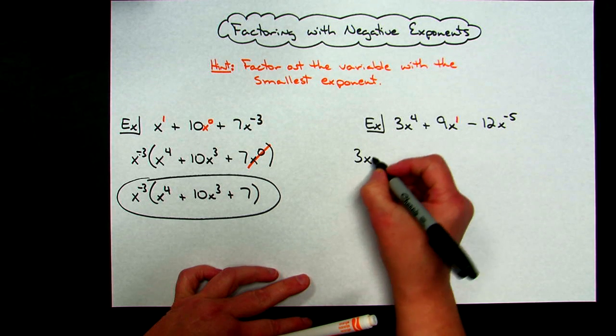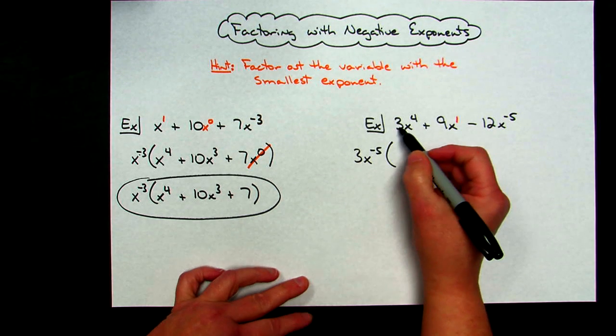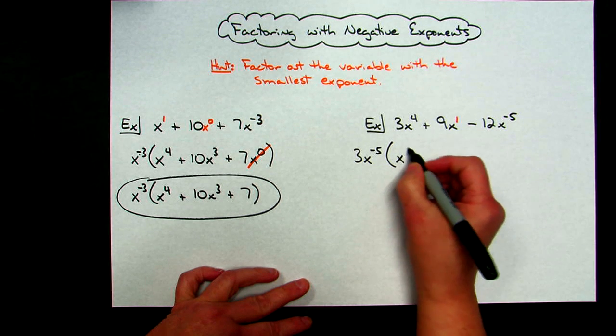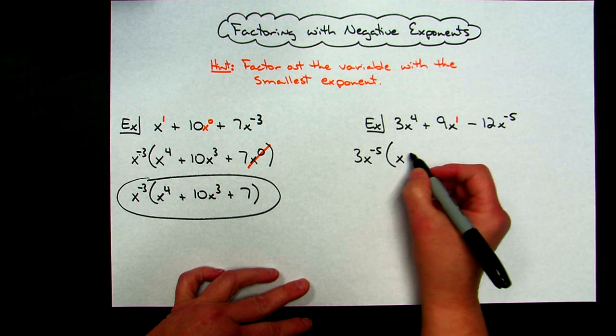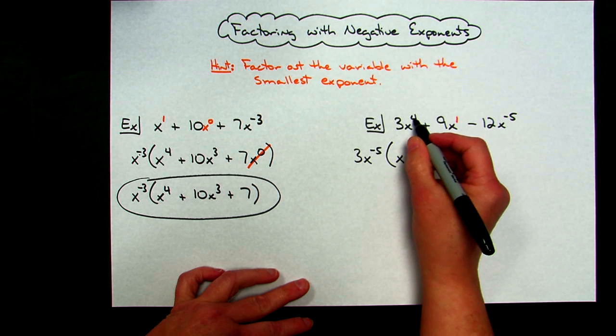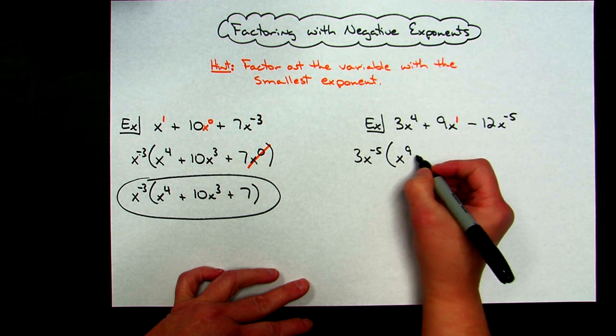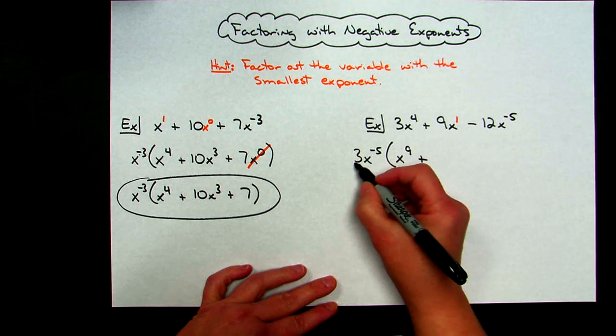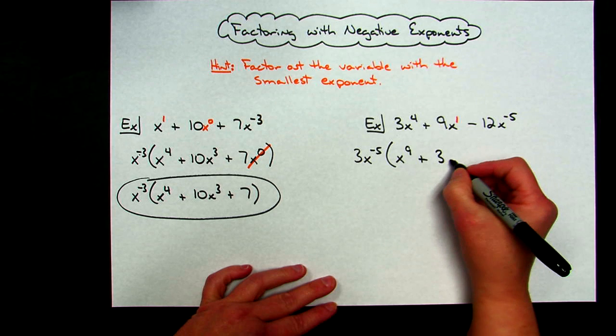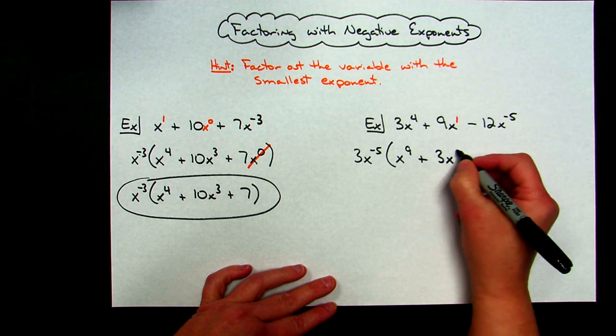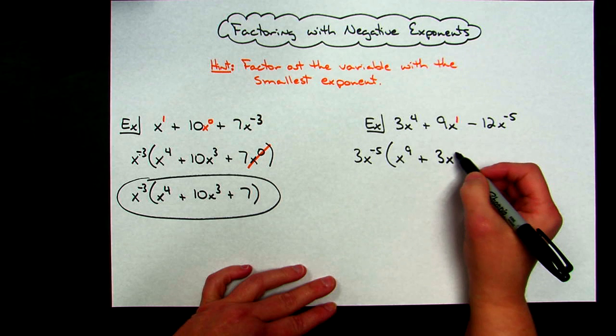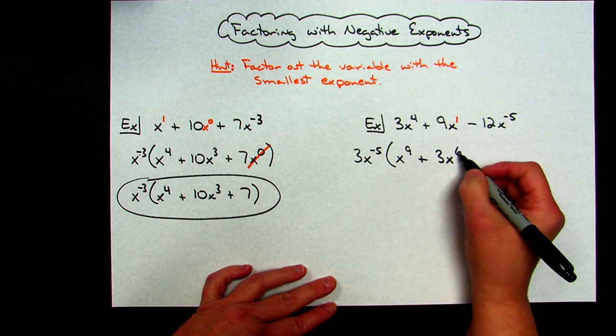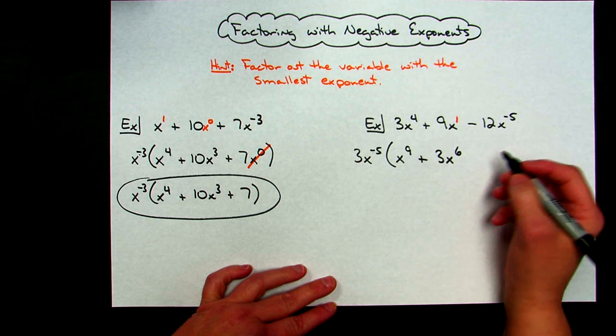So I'm going to factor out 3x^(-5). 3 divided by 3 is going to give me the 1 coefficient. So then I just have to be concerned with what exponent goes right here. -5 plus what number is going to give me 4? Well -5 plus 9 will give you the 4. In this middle term I've got 9, I factored out the 3, that will leave me with a 3. And then I have to figure out what exponent do I need on my x. -5 plus what number will give me 1? If I fill that in with a 6, -5 plus 6 gives me a positive 1.